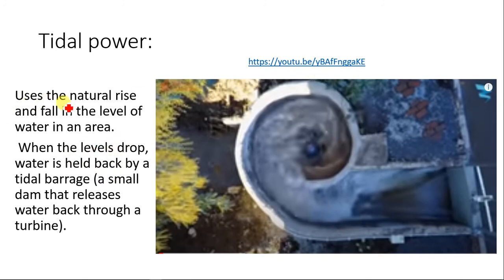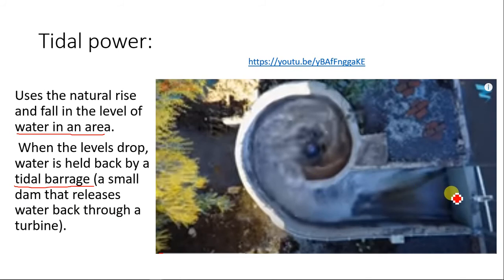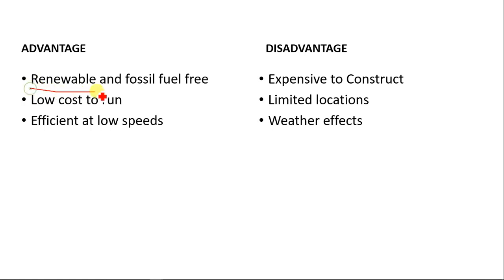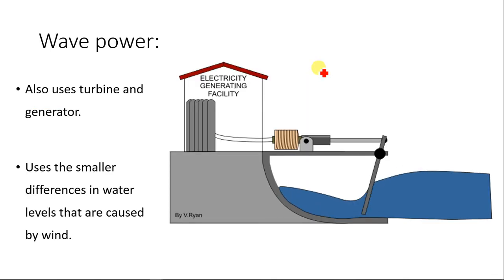Tidal power uses the natural rise and fall in the level of water in an area. When the level drops, water is held back by a tidal barrage — a small dam-like structure — that releases water back through a turbine. As water is released through the turbine, the turbine rotates and generates mechanical energy, and the generator converts that into electrical energy. Advantages: it is renewable and fossil fuel-free; it is low cost to run and efficient at low speed. Disadvantages: it is expensive to construct, limited to certain locations, and affected by adverse weather conditions.